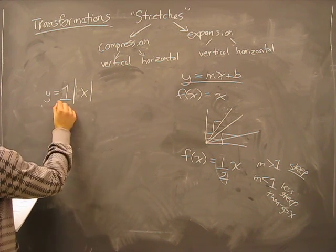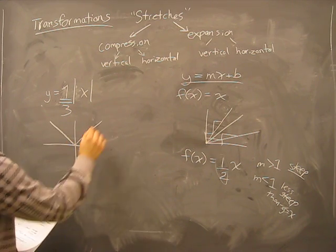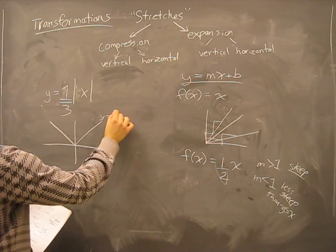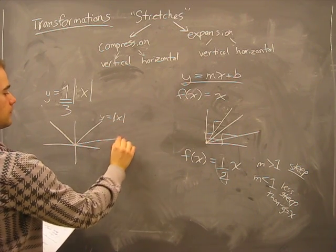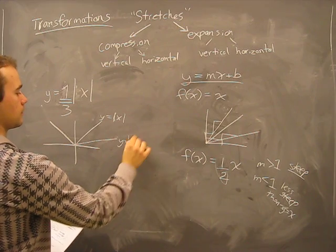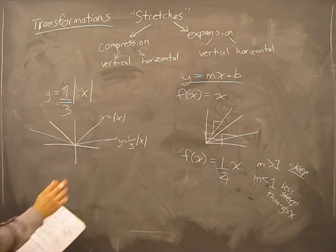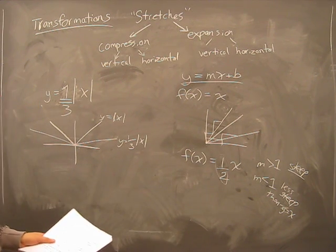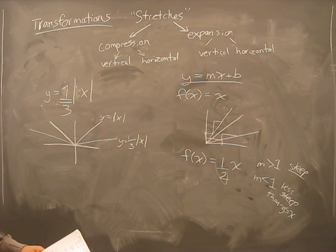Similarly, if I had one third, if this is our y equals absolute value of x, then this would be our one third. It opens up. This would be a vertical expansion.